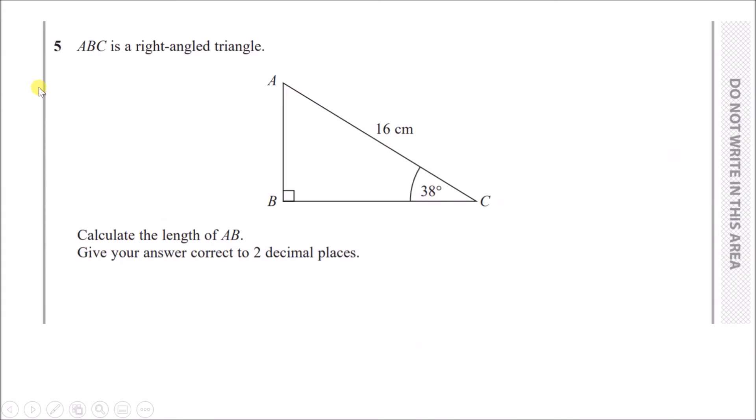Question 5: ABC is a right-angled triangle. Calculate the length of AB and give your answer correct to 2 decimal places. This is a straight-up SOH CAH TOA problem. Let's call AB here x. Because we're dealing with trigonometry right-angled triangles, always think SOH CAH TOA: sine is SOH, cosine is CAH, and tangent is TOA. O, H, and A represent opposite, adjacent, and hypotenuse.